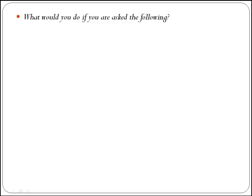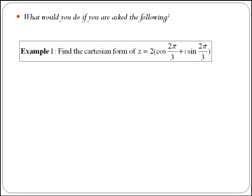What would you do if you were asked the following? Find the Cartesian form of z equals 2 times the quantity cos 2π over 3 plus i sin 2π over 3.